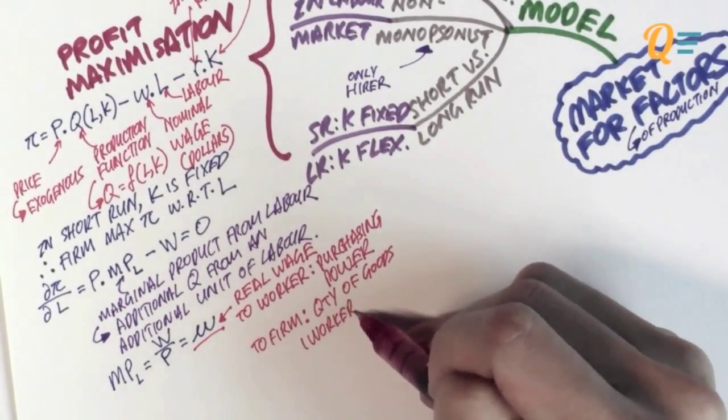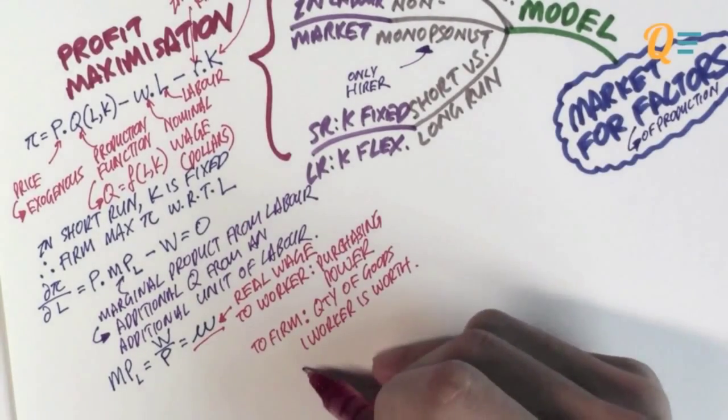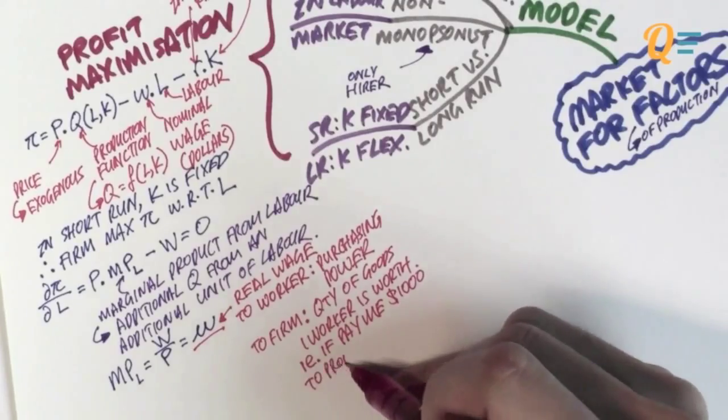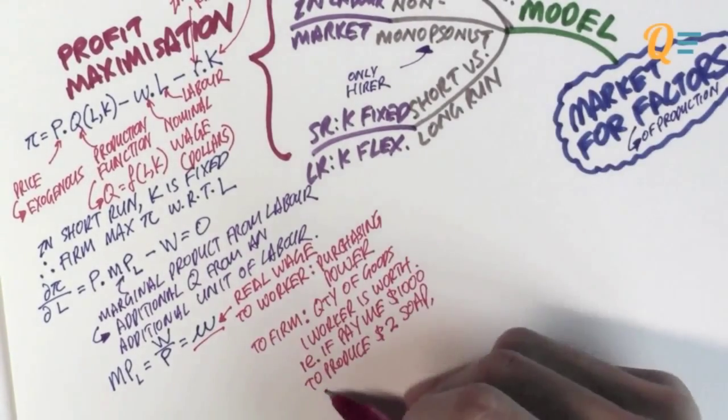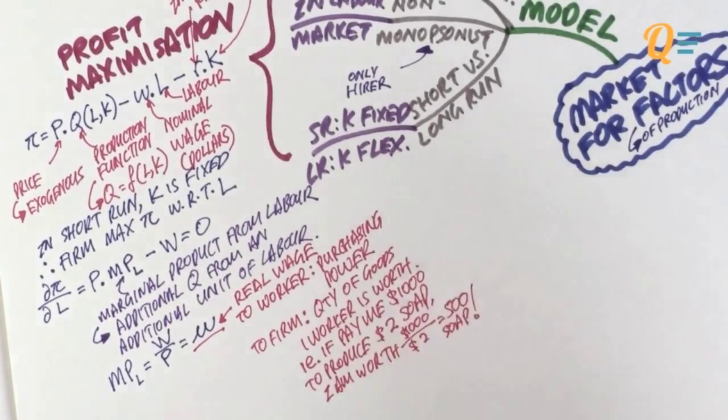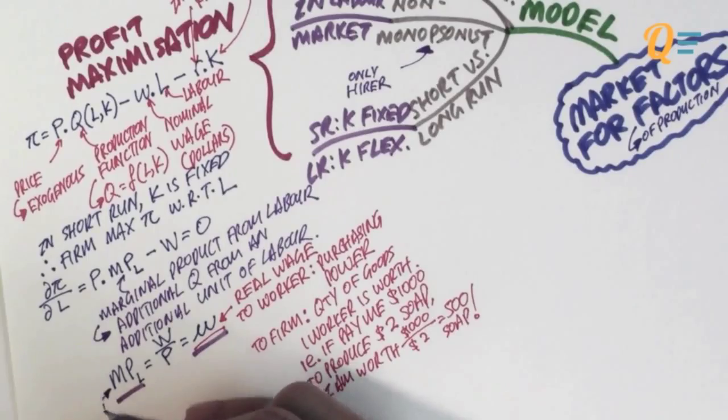To the firm, it actually refers to the quantity of goods that one worker is worth. If you're going to pay me $1,000 to produce soap bars that cost $2 to sell, that people sell for $2, what that means is that I'm actually worth 500 bars of soap. That is what I'm worth to you if you hire me for $1,000, and you're running a soap company.